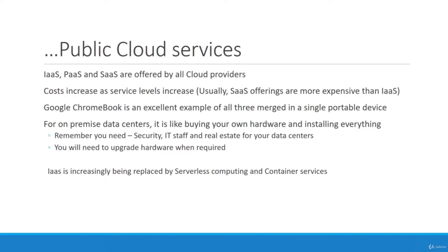A Google Chromebook is actually an example of all three merging: it offers SaaS in terms of Google products, PaaS in terms of the Google ecosystem, and IaaS in terms of the operating system you can access. Sometimes there's a thin line between IaaS and PaaS, but it's not very necessary to understand the difference very deeply — how you use the product often differentiates between the two.